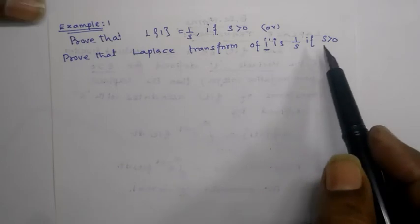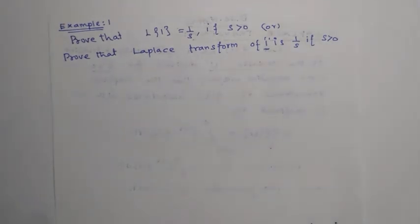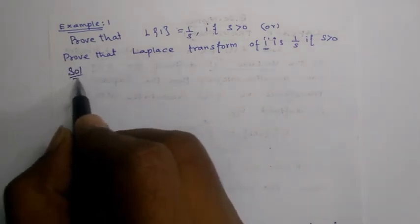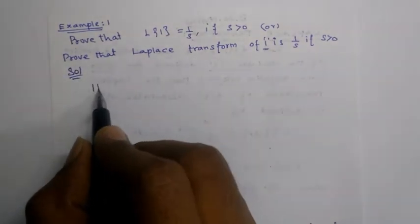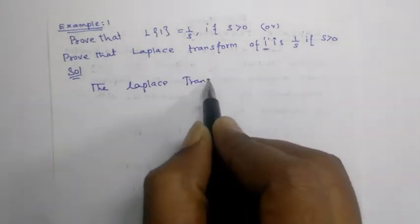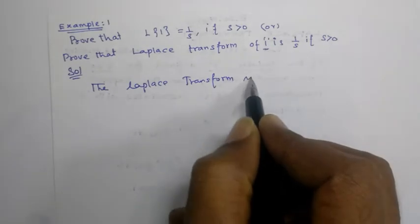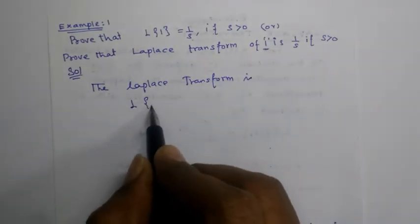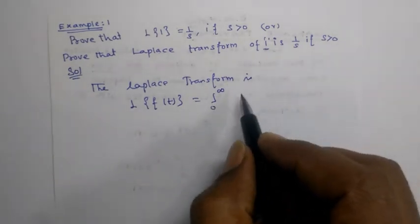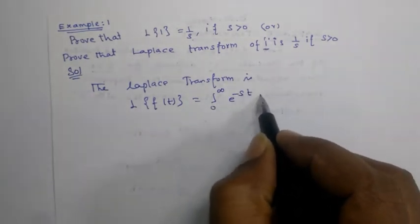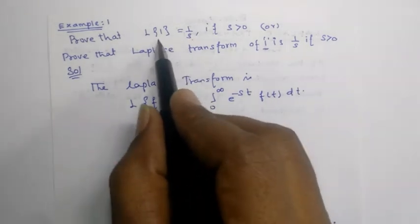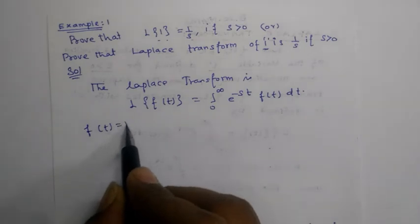Now let's compute the Laplace transform of 1. We write f of t equals 1, so the transform is the integral from 0 to infinity of e to the power minus s t, f of t, dt. Substituting f of t equals 1.